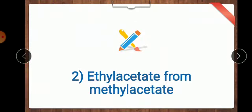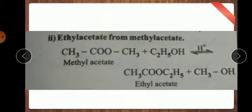And second one, ethyl acetate from methyl acetate. Ethyl acetate formula, CH3COOCH3 plus C2H5OH. C2H5OH is ethanol in presence of H+. What happened here? CH3COOCH3 as well as this methanol. CH3OH will be released out and remaining compound will be saved. C2H5 and CH3COOC2H5. Methanol is formed. This is second.